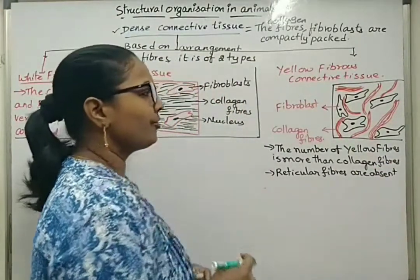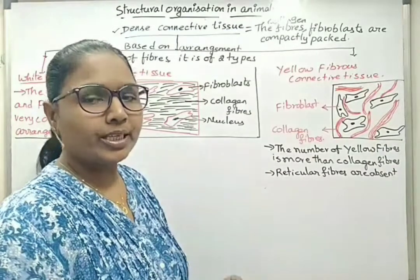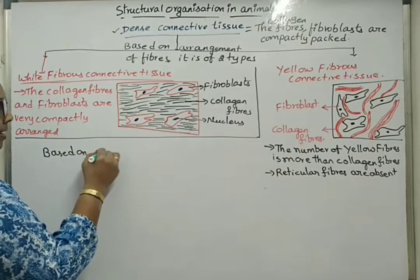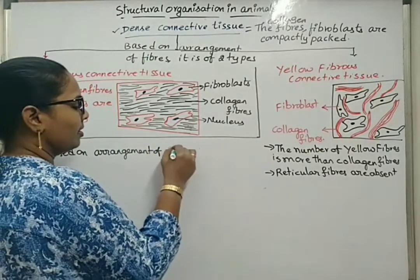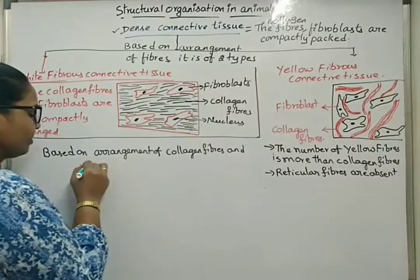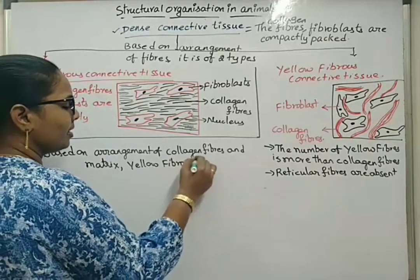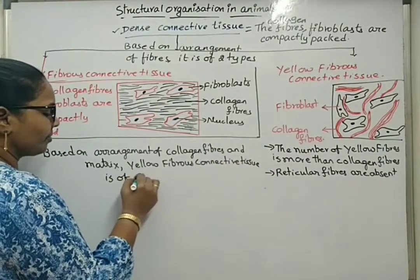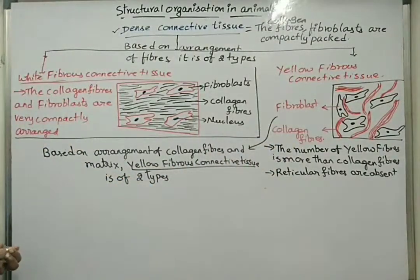On the basis of distribution of yellow fibers, collagen fibers, and matrix, yellow fibrous connective tissue is of two types: dense regular and dense irregular. So, based on arrangement of collagen fibers and matrix, yellow fibrous connective tissue is classified into two types.